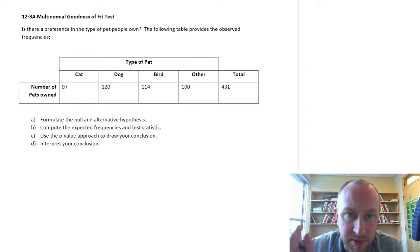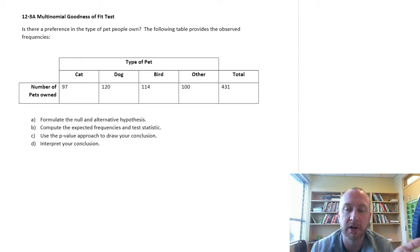We have a number of people who own a cat, have 97 cat owners, 120 dog owners, 114 birds, and 100 who have something else, for a total of 431 people that we've talked to.